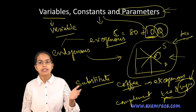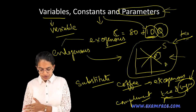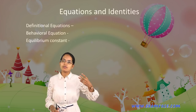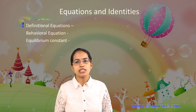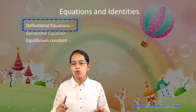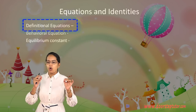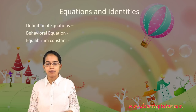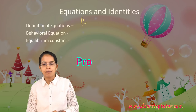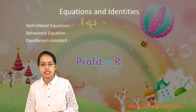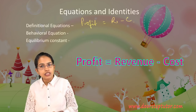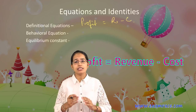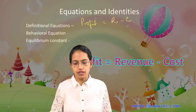So we have variables, constants, and parameters. The next important thing is equations and identities. Under equations, we have three types. The first is the definitional equation, which holds true by definition — the identity between two alternate expressions having exactly the same meaning. For example, profit is a function of revenue minus cost, and that stands true universally. That is a definitional equation.